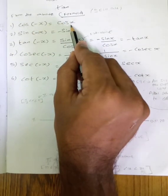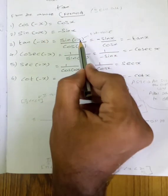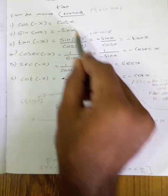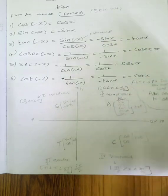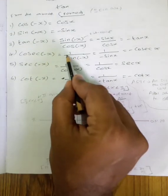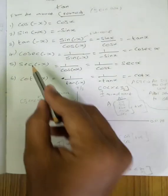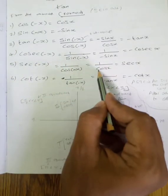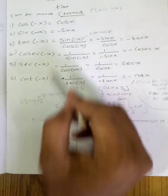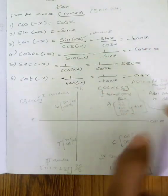For negative angle formulas: sin of minus x equals minus sin x. Cos of minus x equals cos x. Tan of minus x equals minus tan x. Cosecant of minus x equals 1 by sin of minus x, which gives minus cosecant x. Secant of minus x equals 1 by cos of minus x, which equals secant x. Cot of minus x equals 1 by tan of minus x, so minus cot x.